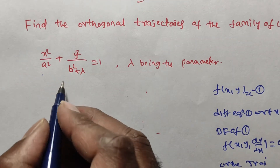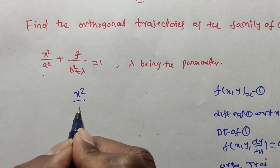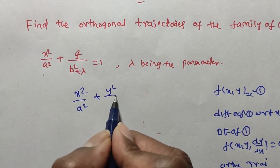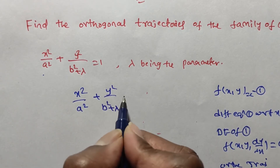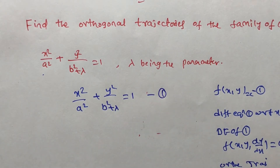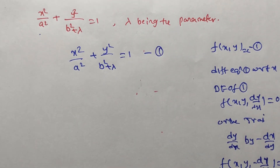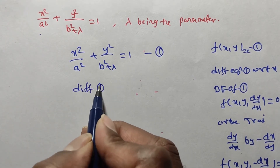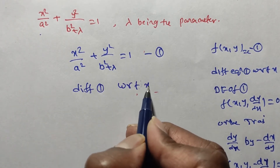Now, considering the given function x²/a² + y²/(b² + λ) = 1 as equation number 1, where λ is a parameter, we differentiate equation 1 with respect to x.